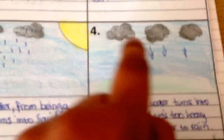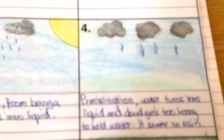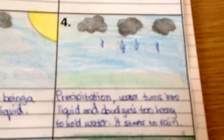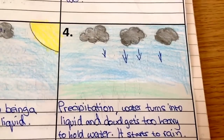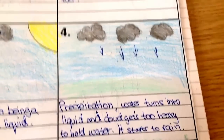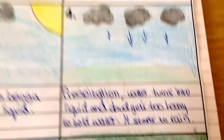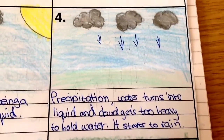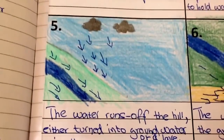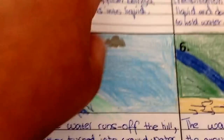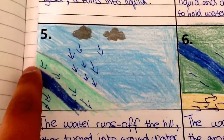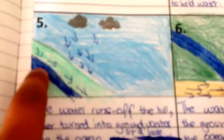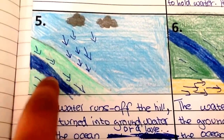The fourth stage is when the clouds get saturated. Saturated means when the clouds can't hold any more water, so it starts raining. That's called precipitation. The fifth stage is when the water falls down onto the mountain.